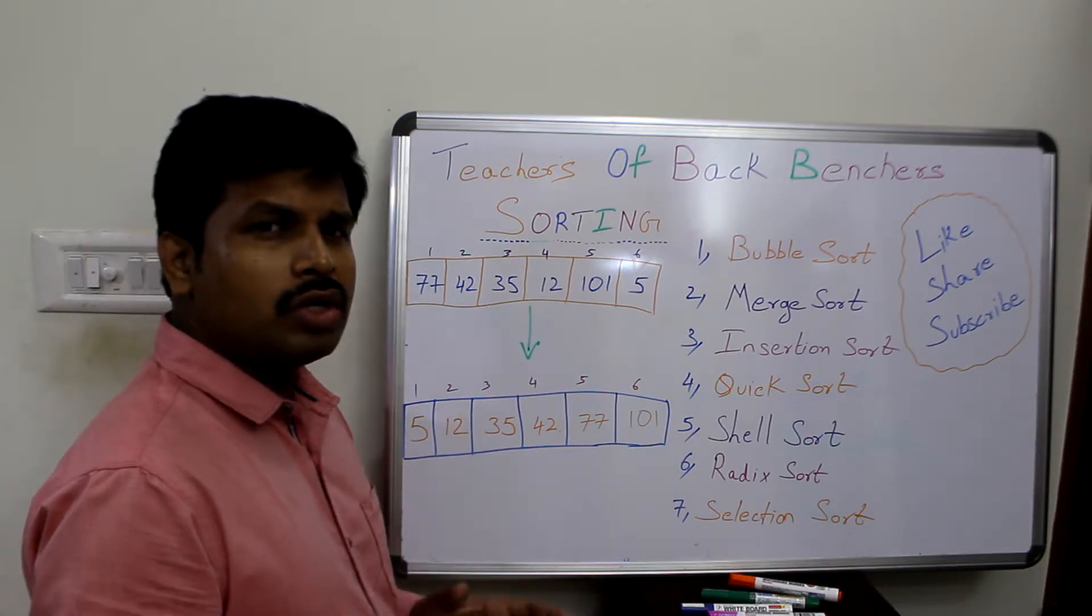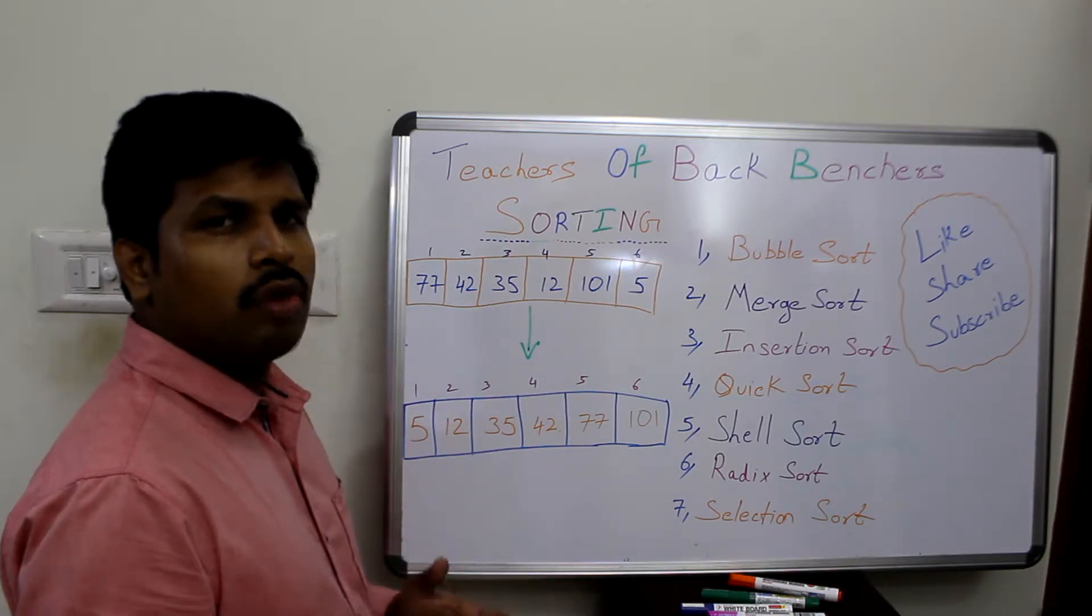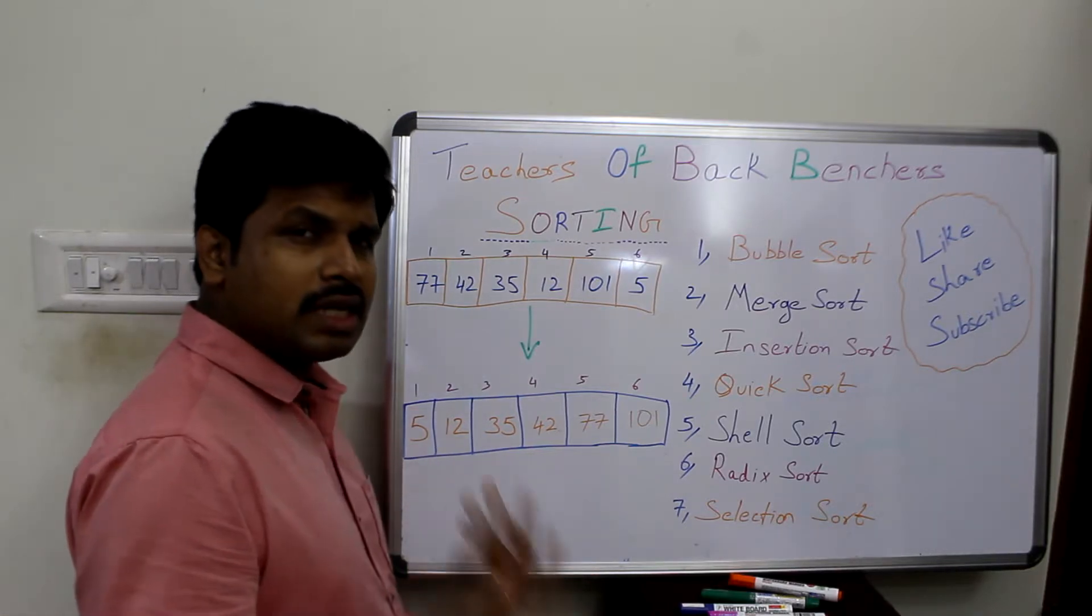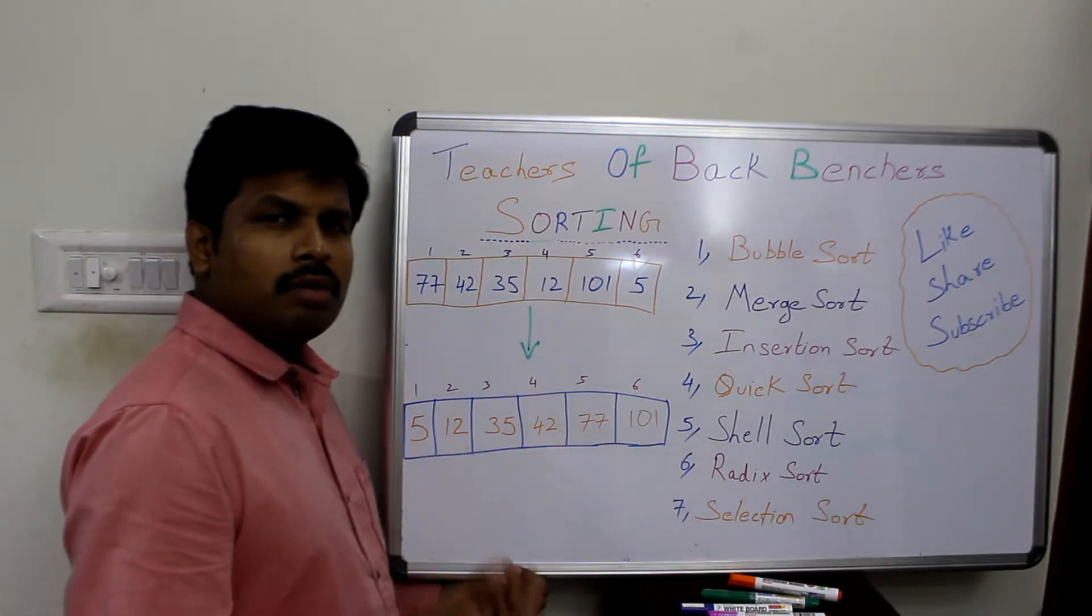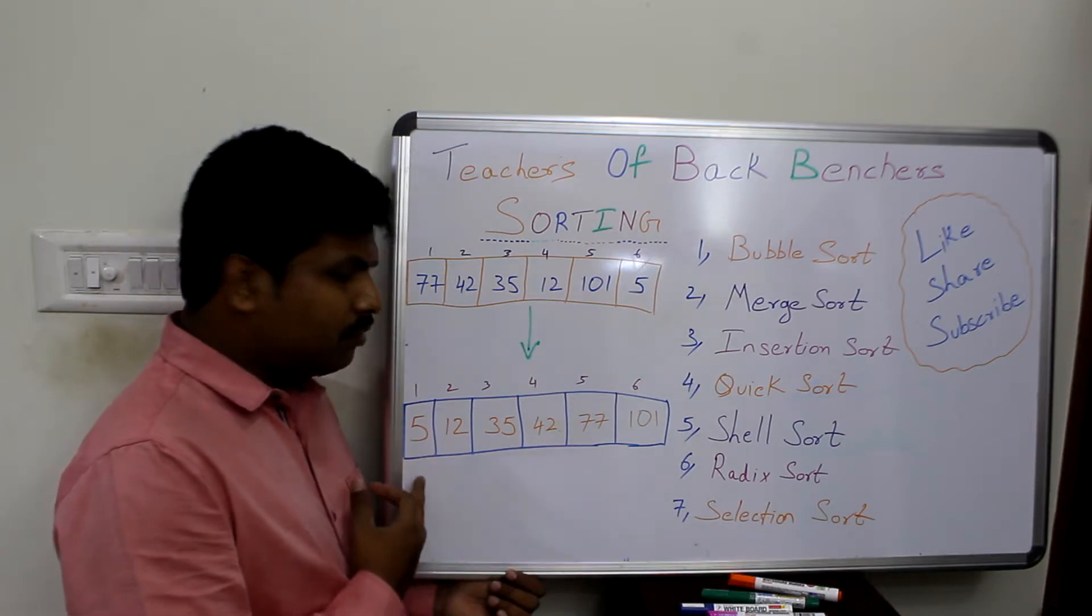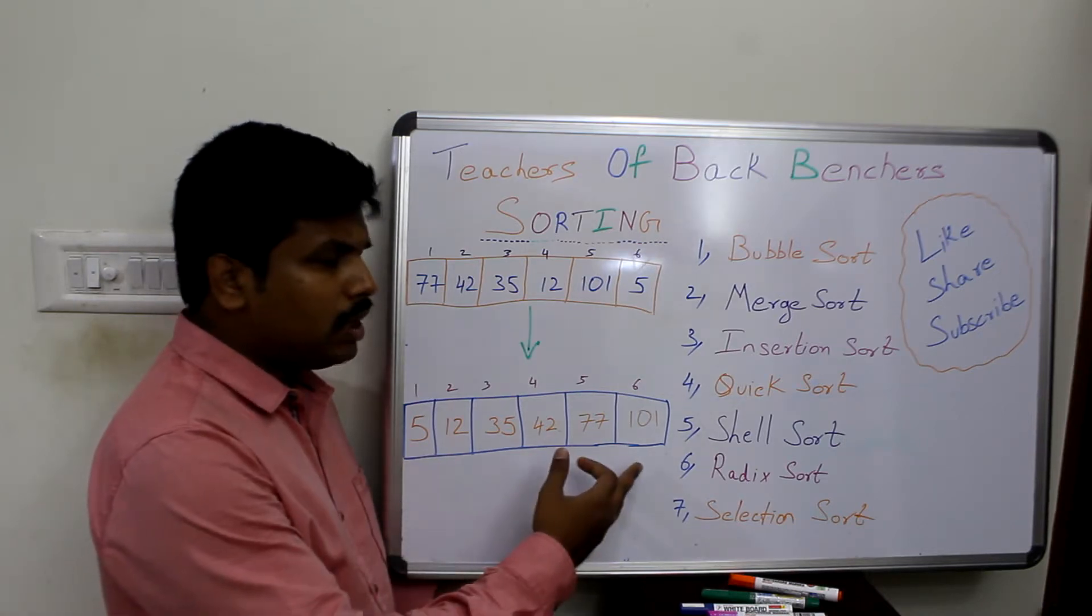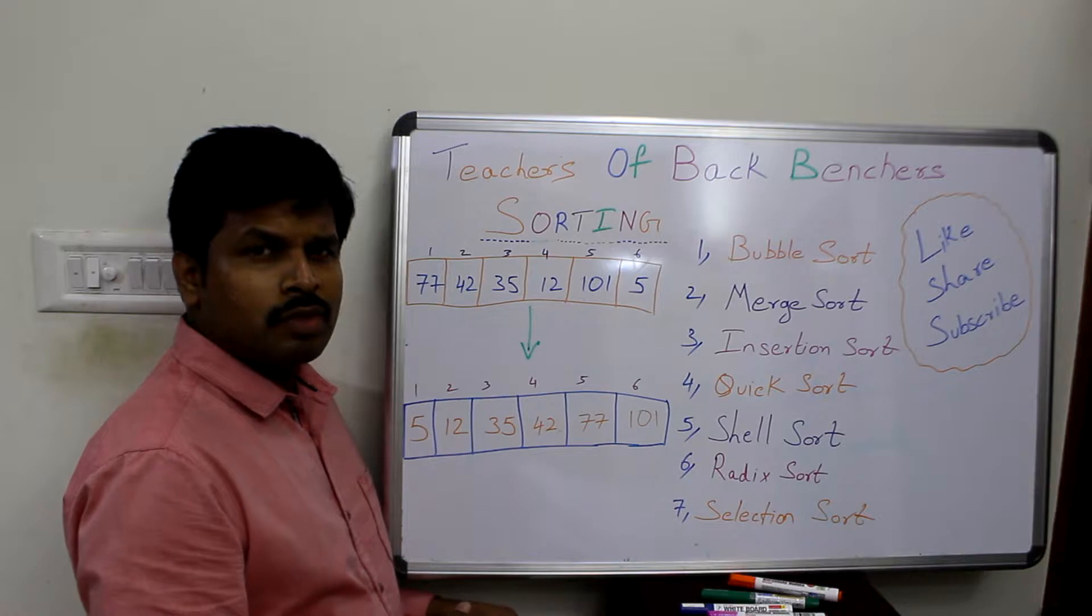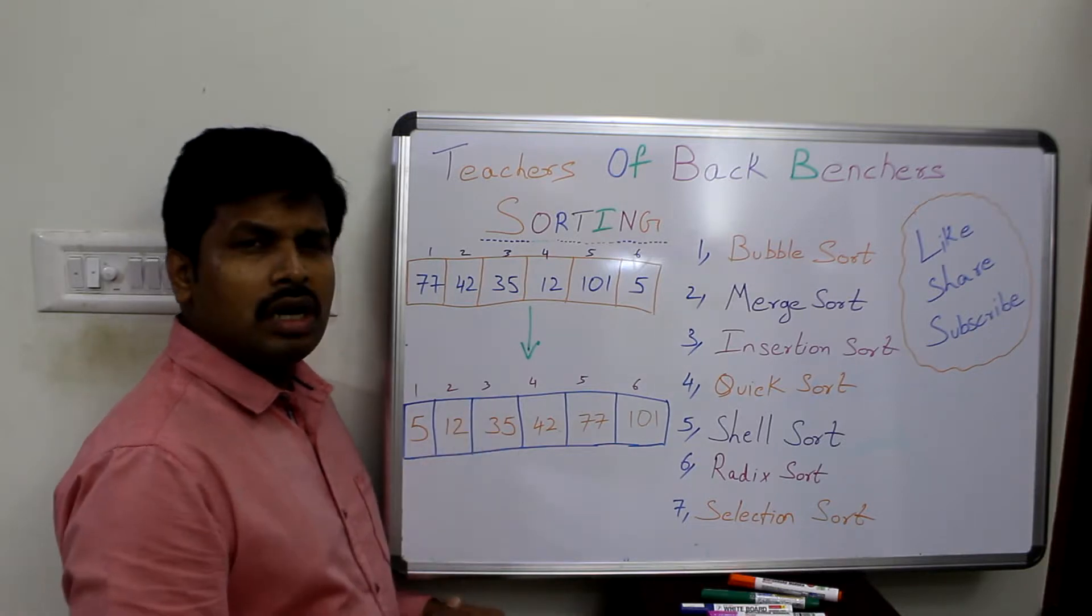Now we are going to sort the given series. The final output, if it is in ascending order, will have the minimum value in the first place and the largest value in the last place. This is a six number series and we can sort it out easily.